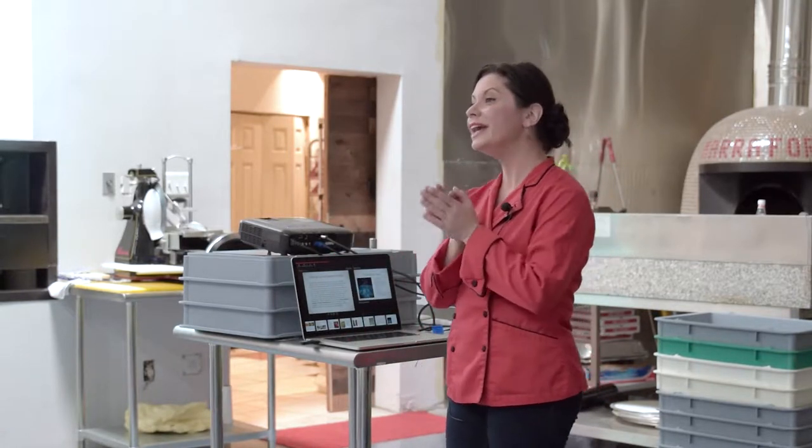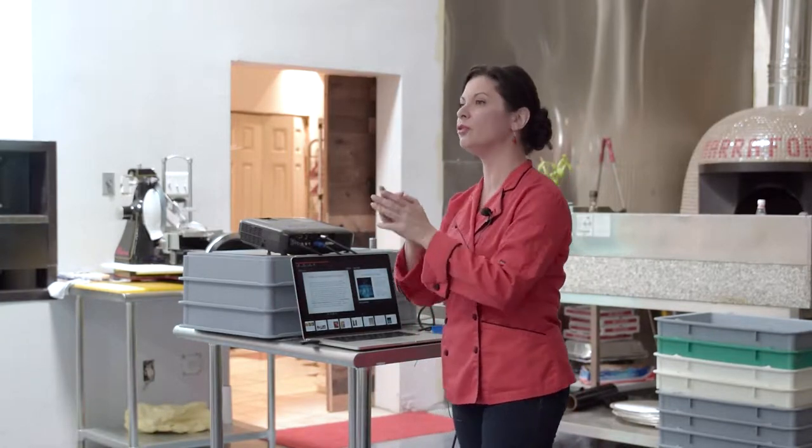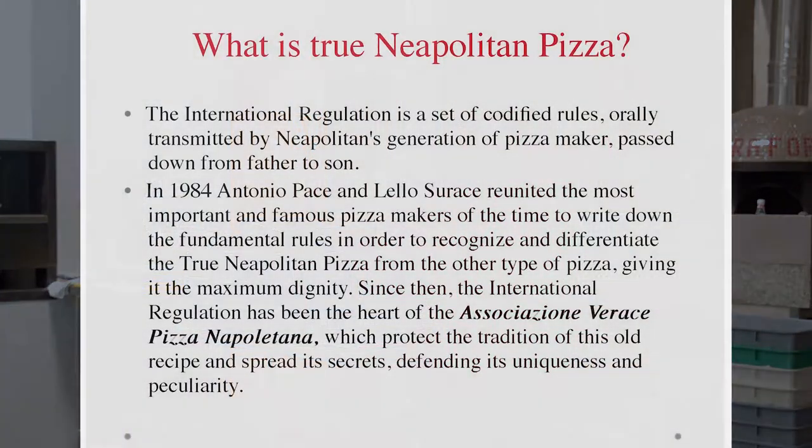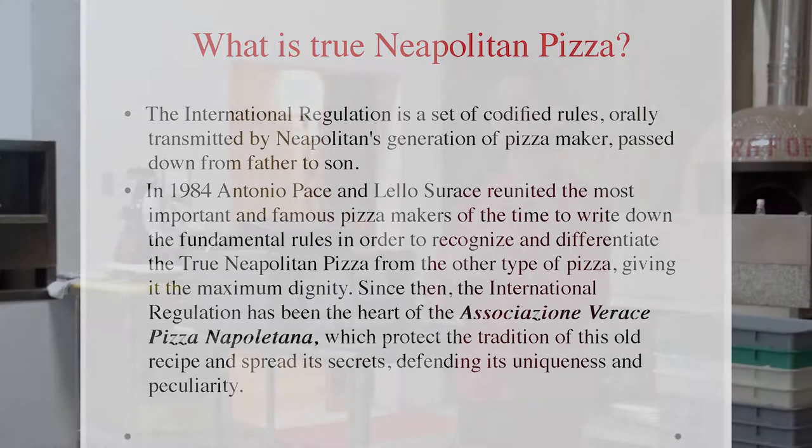So for those of you who turned to certification, you already know about AVPN in 1984 and the development of the authentic Neapolitan pizza and the Association of True Pizza Napoletana, and what that means. But this standardization of food in Italy is nothing new. It's something that they've always done, and it's something that all countries can benefit from, and it's something that we're going to be seeing more and more in the world and more and more in the United States.